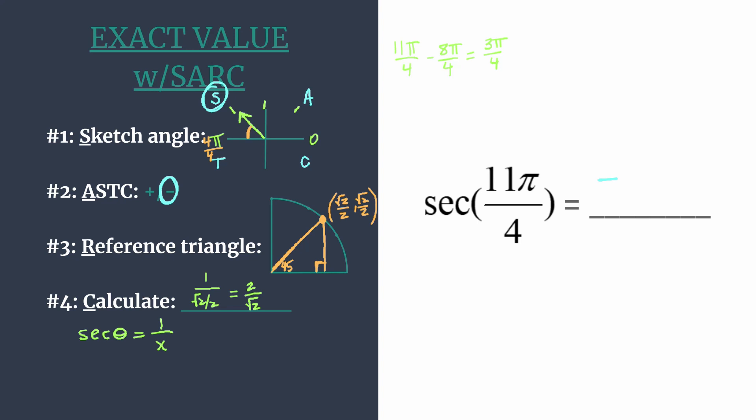Eventually you'll get to the point where you'll see, oh, it's this reciprocal of √2 over 2. I just know that's the √2 because I've done this so much. Once you practice enough, you'll just be able to make that jump and you'll know the reciprocal off the top of your head.